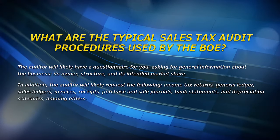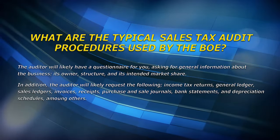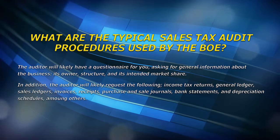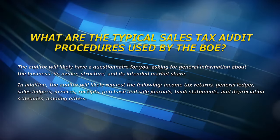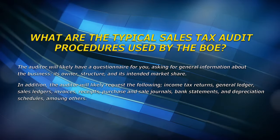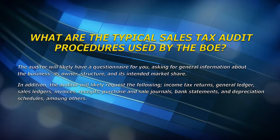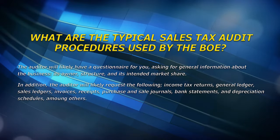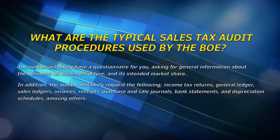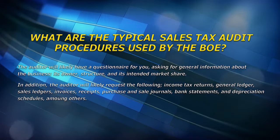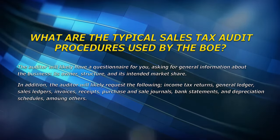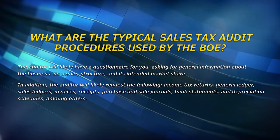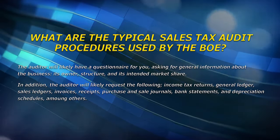The auditor is going to want to see your income tax returns — both your federal and your state — your general ledger, your sales ledgers, your invoices, your receipts, your purchases and sales journals, your bank statements, and depreciation schedules, among other things. All income tax filing documents will be reviewed.